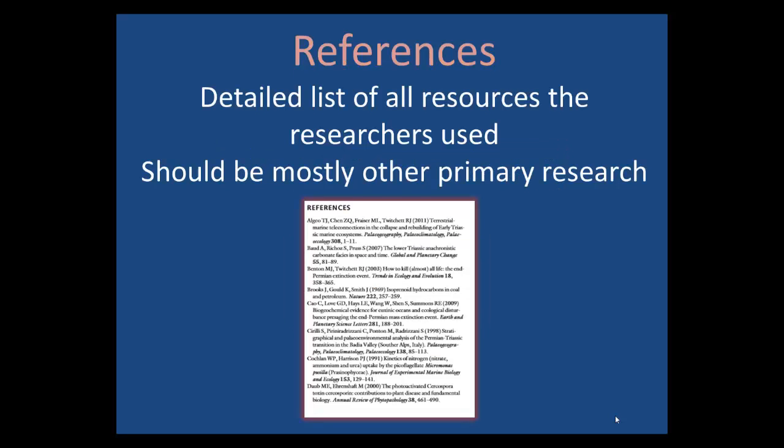Lastly, there will be a set of references. Just like you need to cite your sources, primary research articles will also have a list of citations at the end. This list will usually be very long, in some cases multiple pages.